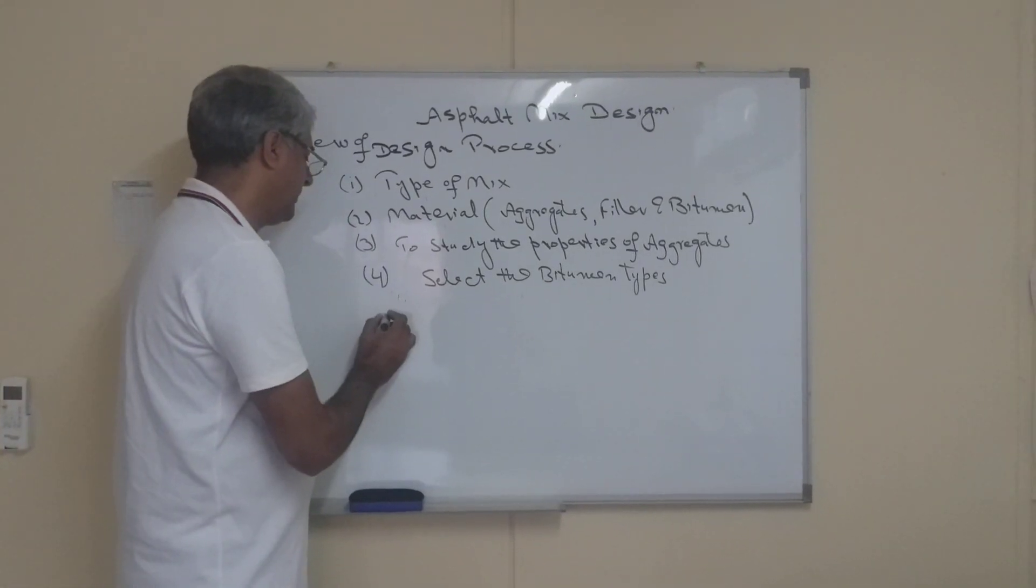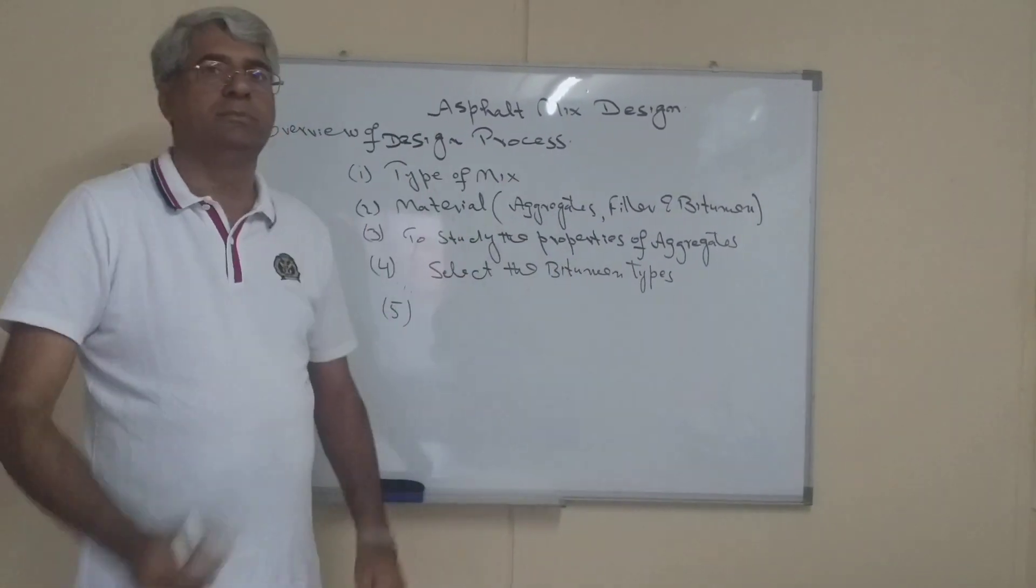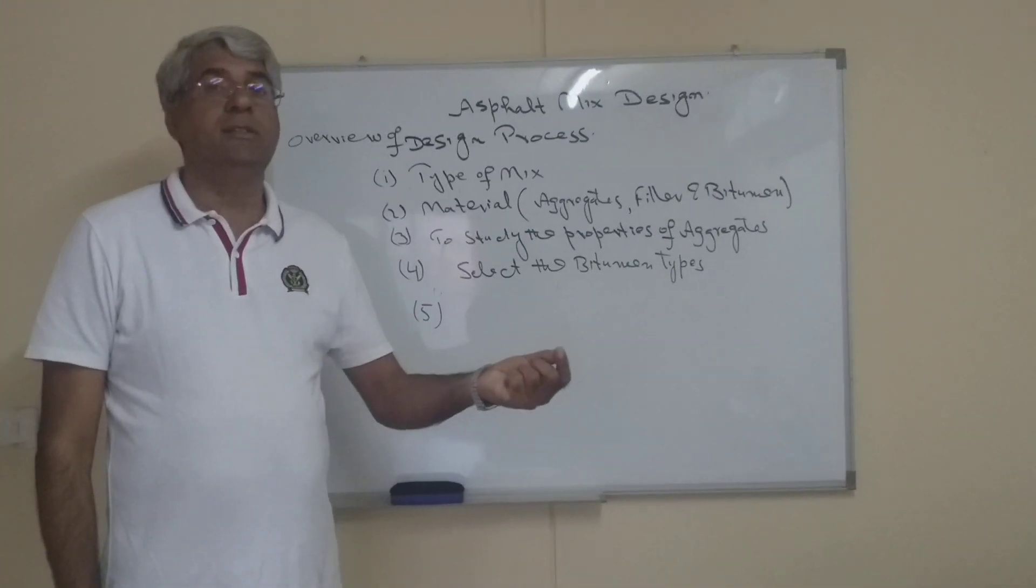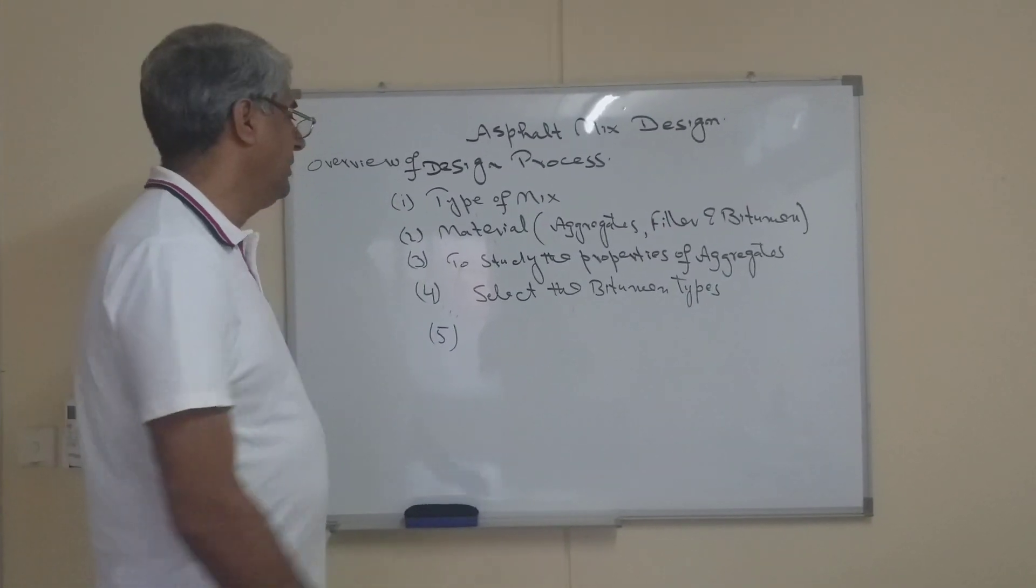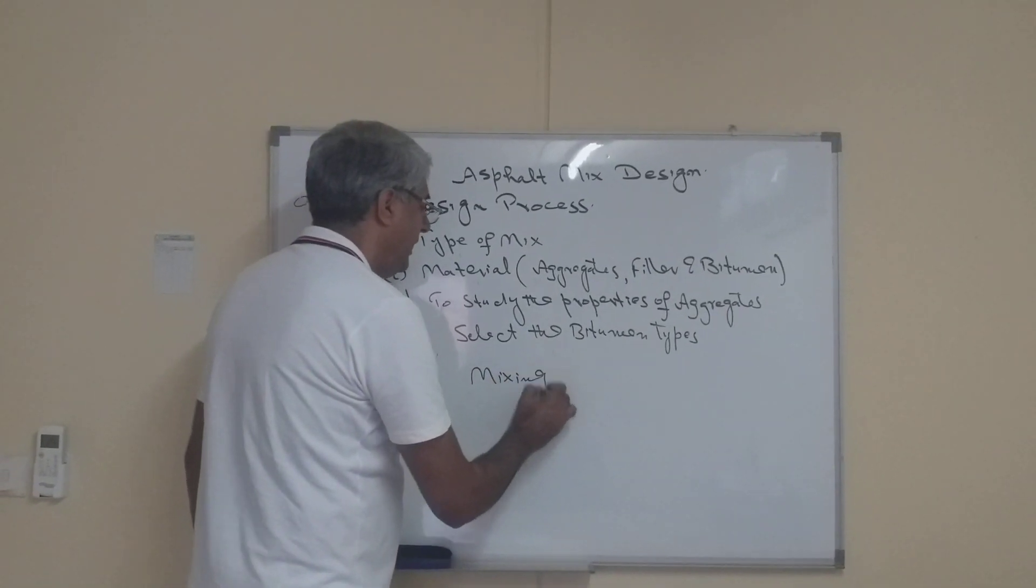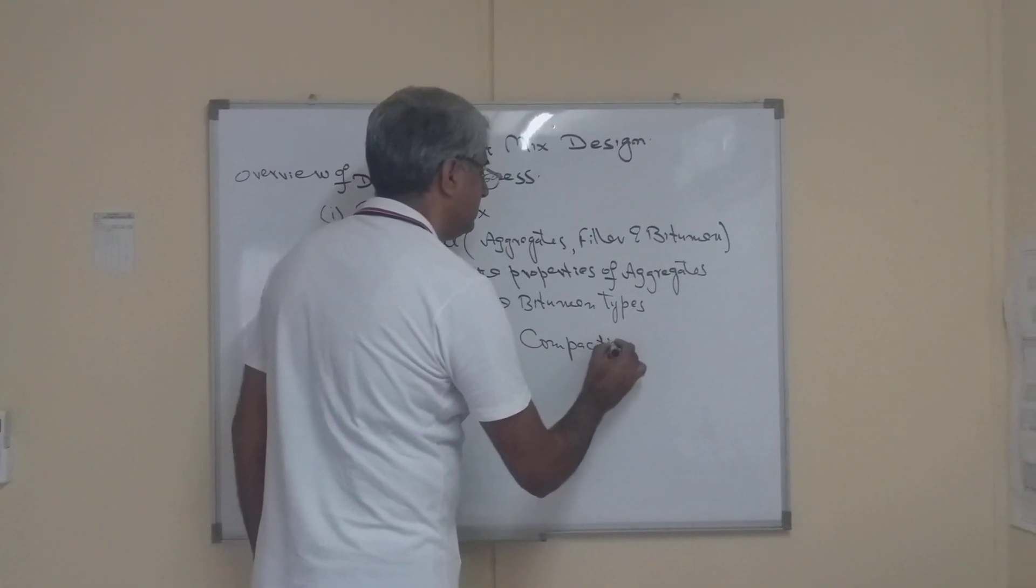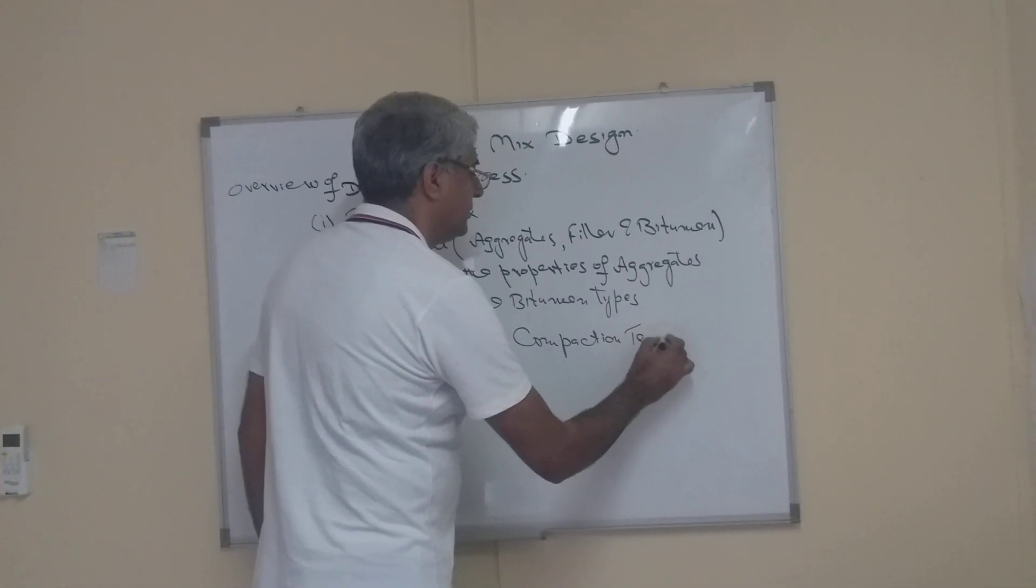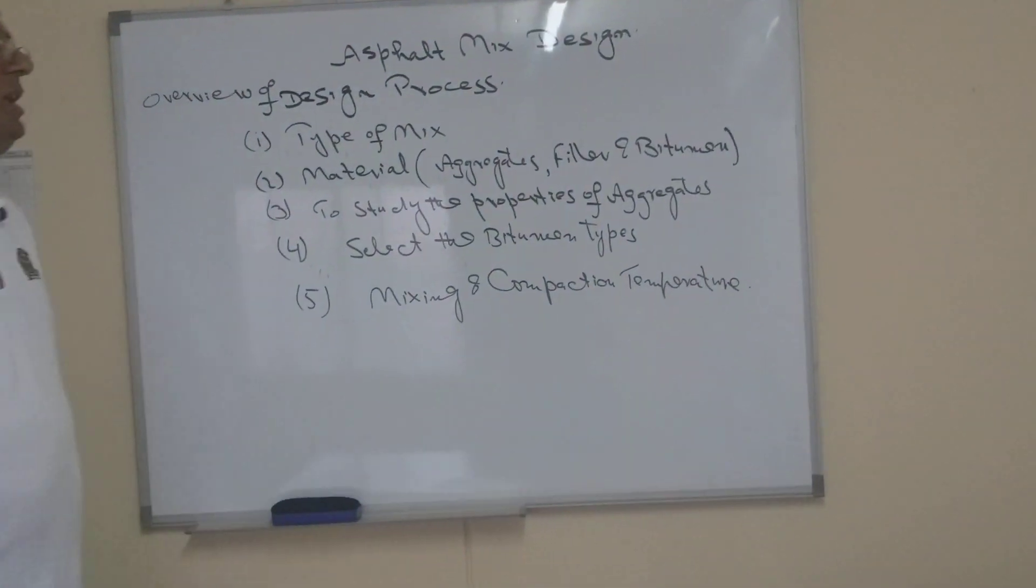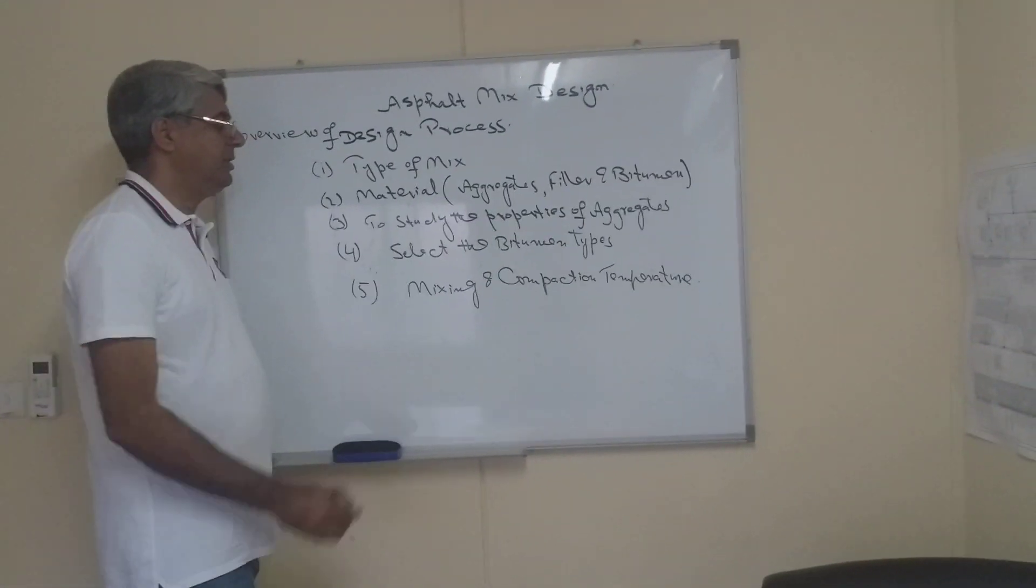After the selection, you know these aggregates and these bitumen we have to mix up with each other. For the mixing, we should know what is the temperature required. So that's why now we will define the fifth part of this mix design: mixing and compaction temperature. This will be given you in detail when we start developing of this mix design, to that what is the mixing temperature and what is the compaction temperature.